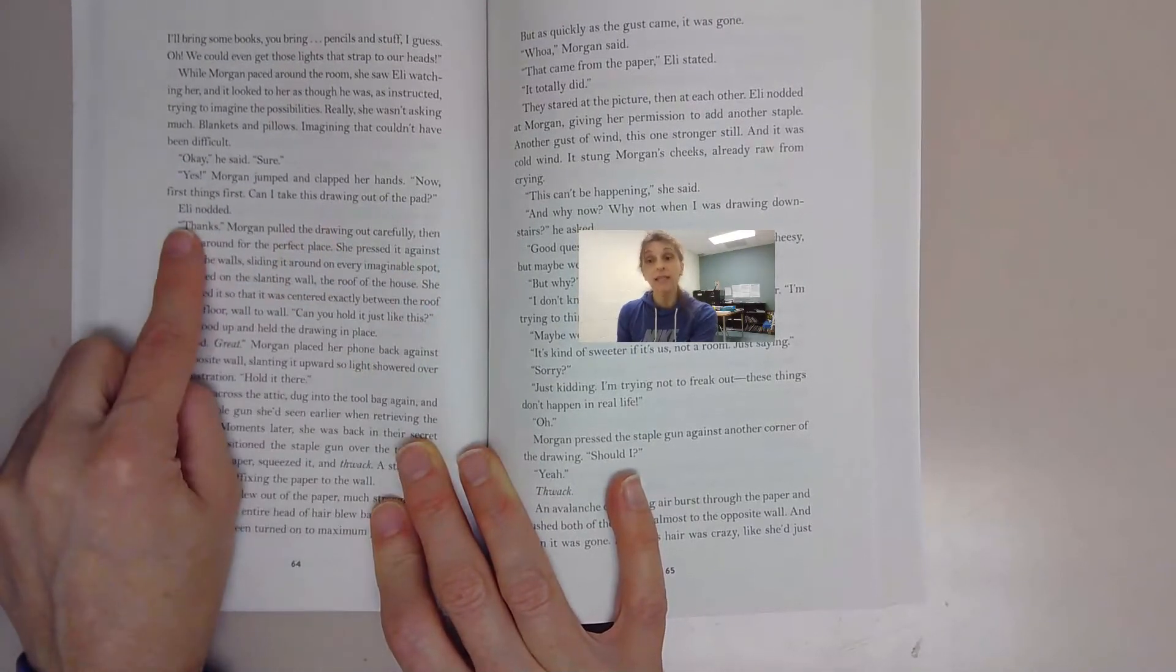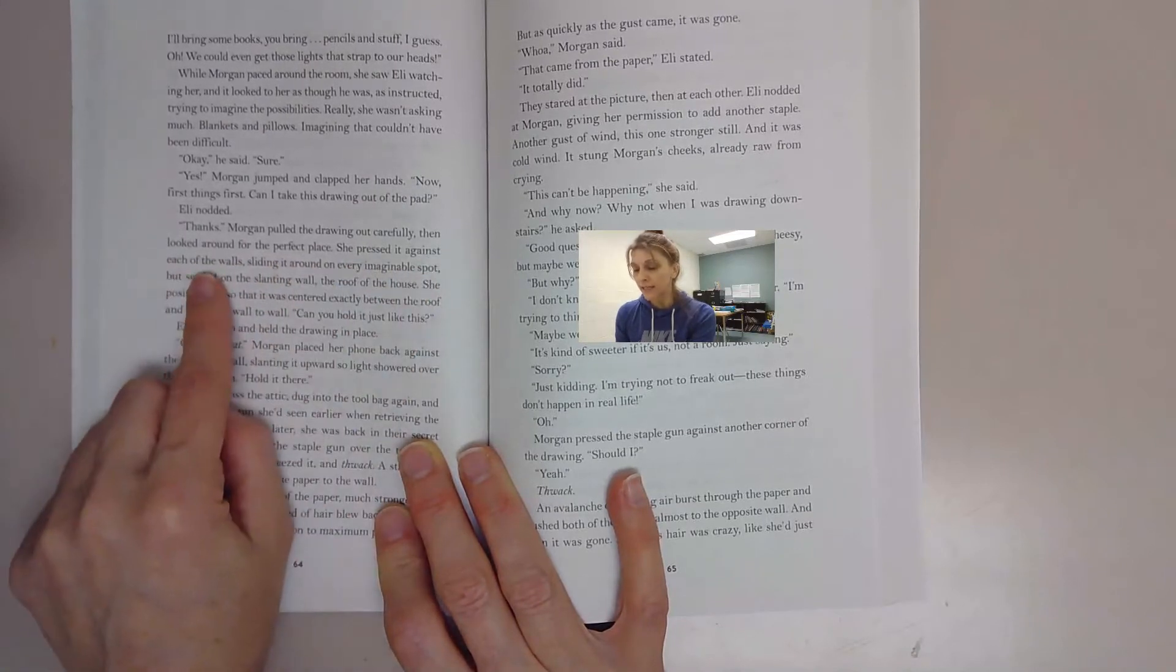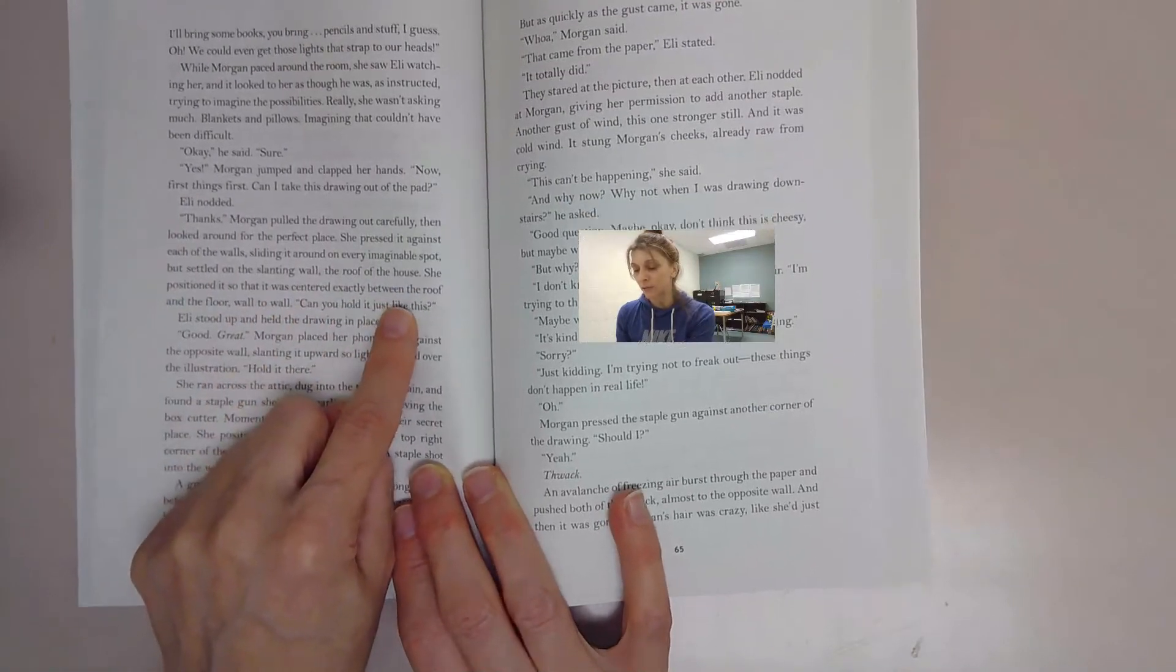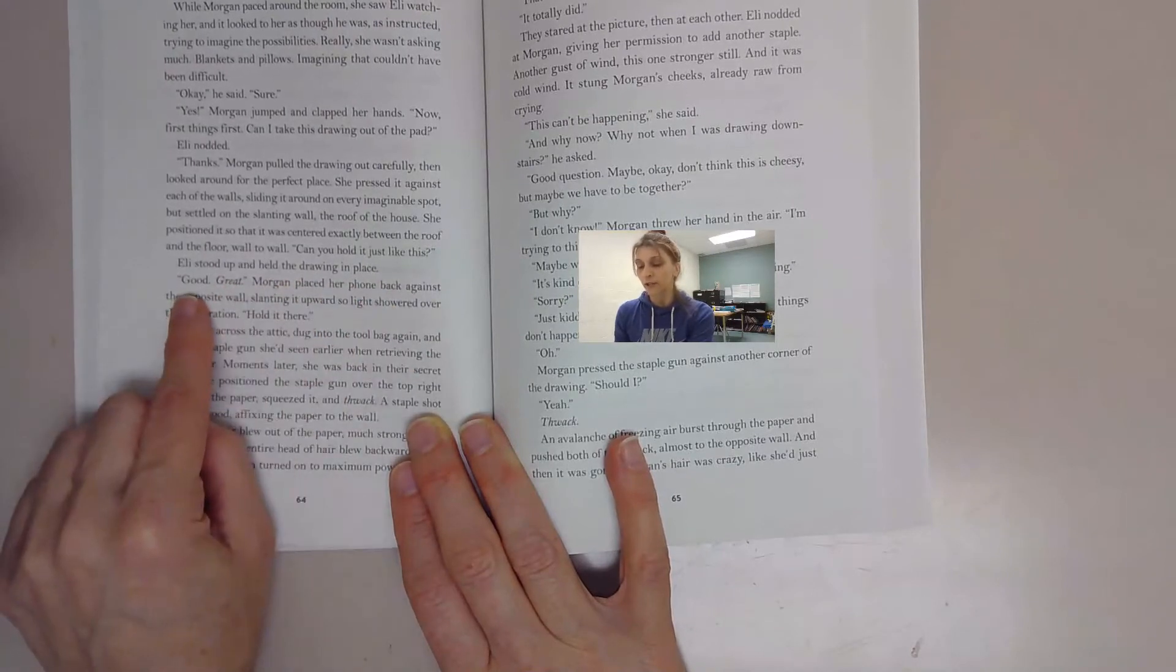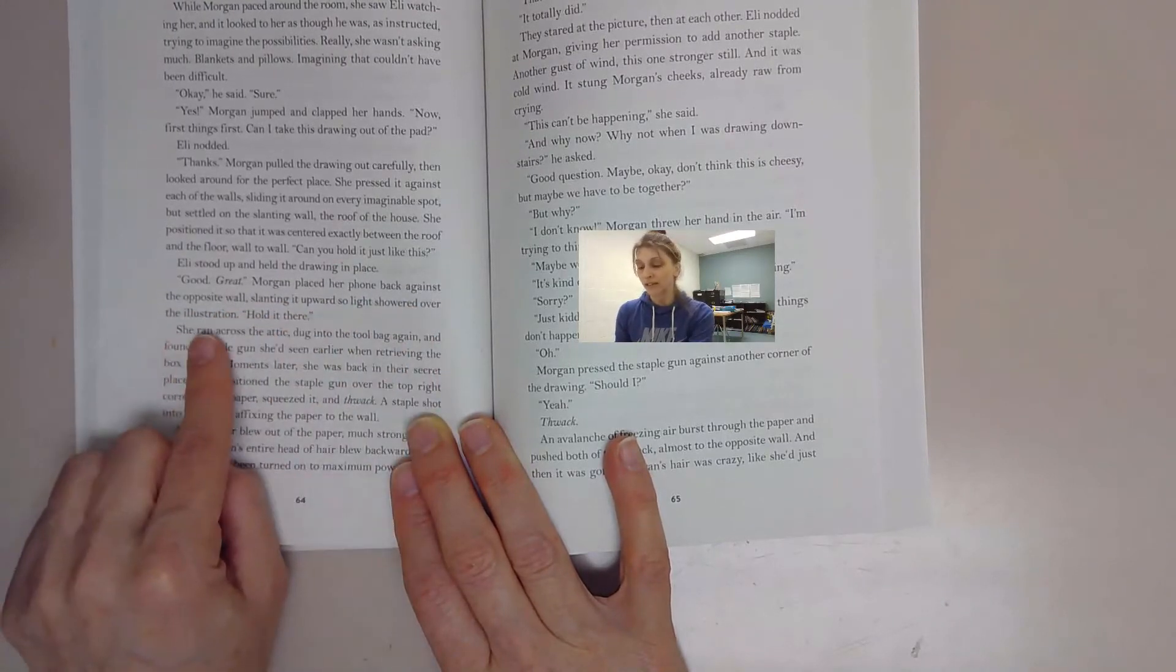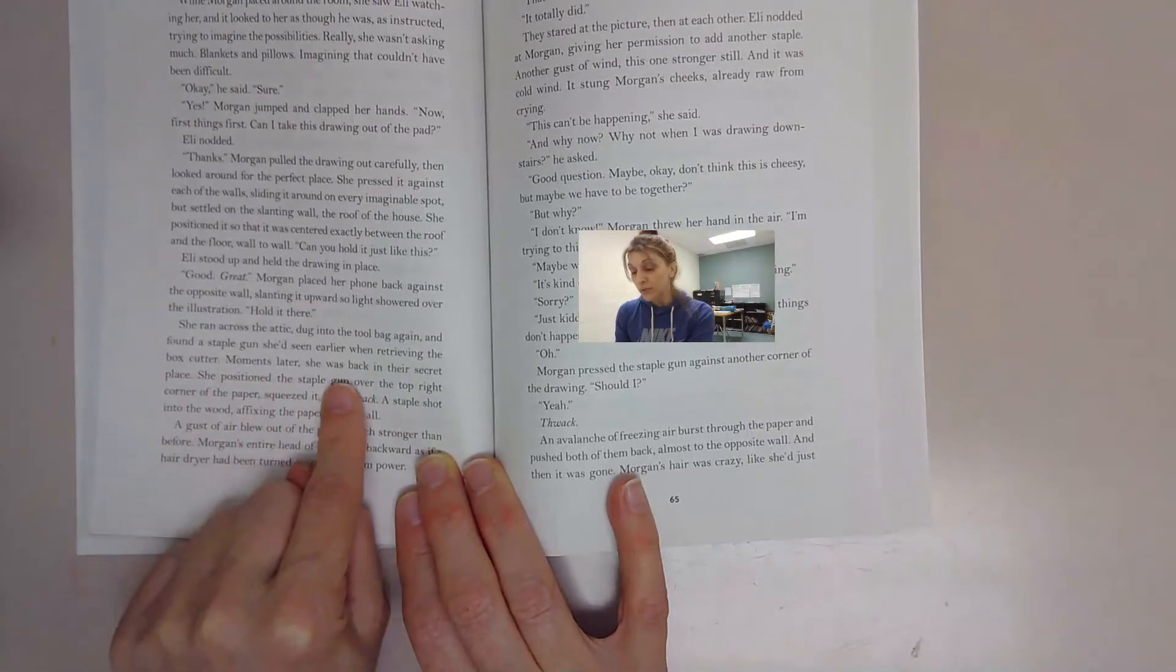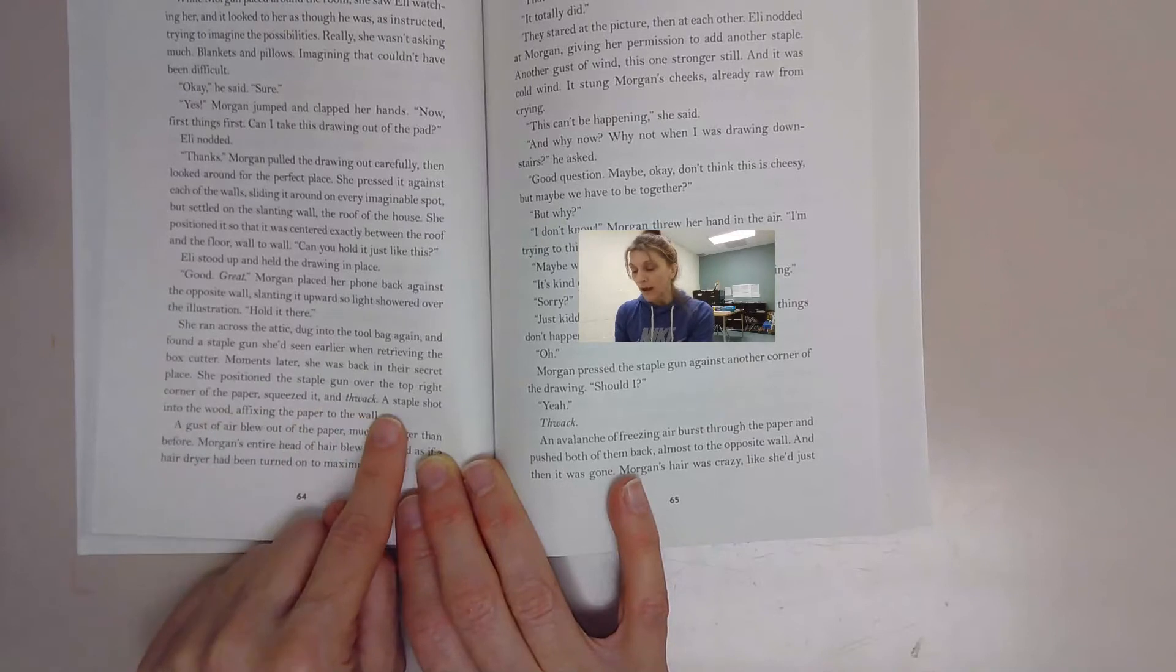Now first things first, can I take this drawing out of the pad? Eli nodded. Thanks. Morgan pulled the drawing out carefully, then looked around for the perfect place. She pressed it against each of the walls, sliding it around on every imaginable spot, but settled on the slanting wall, the roof of the house. She positioned it so that it was centered exactly between the roof and the floor, wall to wall. Can you hold it just like this? Eli stood up and held the drawing in place. Good, great. Morgan placed her phone back against the opposite wall, slanting it upward so light showered over the illustration. Hold it there. She ran across the attic, dug into the tool bag again and found a staple gun she'd seen earlier when retrieving the box cutter. Moments later she was back in their secret place.